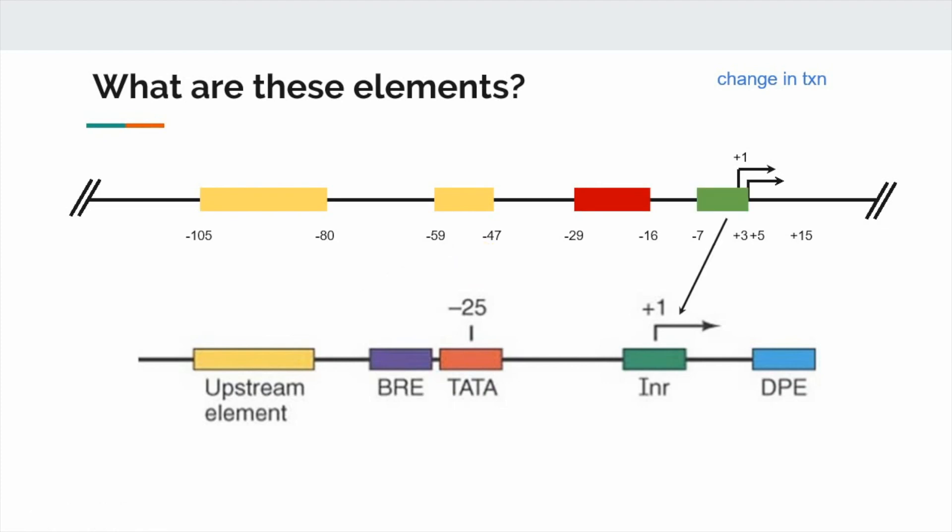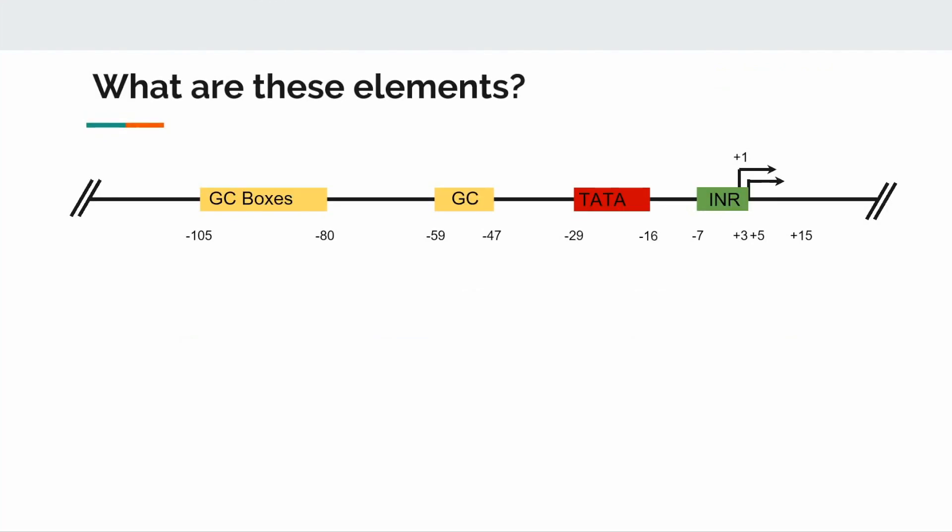Lastly, this element around the plus 1 is almost certainly an INR, as they are typically located about the plus 1. To wrap up, other experiments have identified what these elements actually are in the herpes TK promoter. These two sets of upstream elements are actually a series of GC boxes. The element centered around minus 25 is actually a TATA box, and the element around plus 1 is in fact an INR.